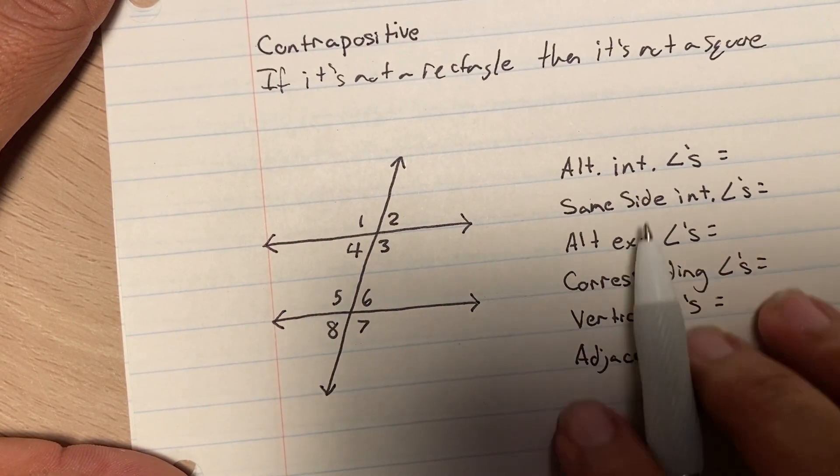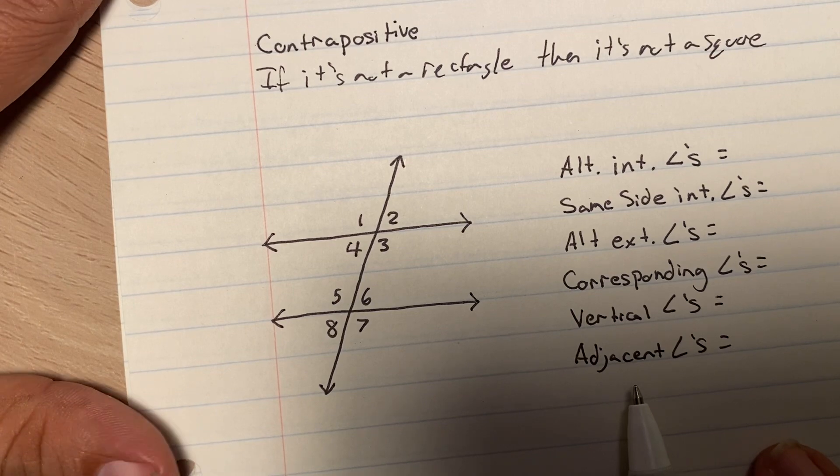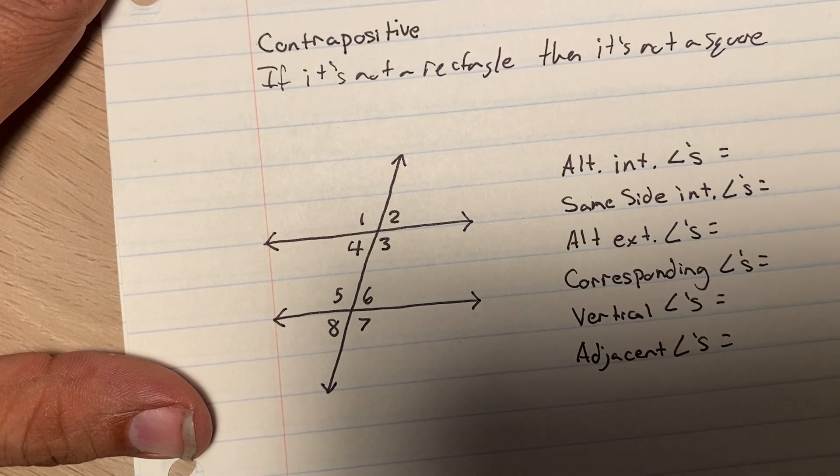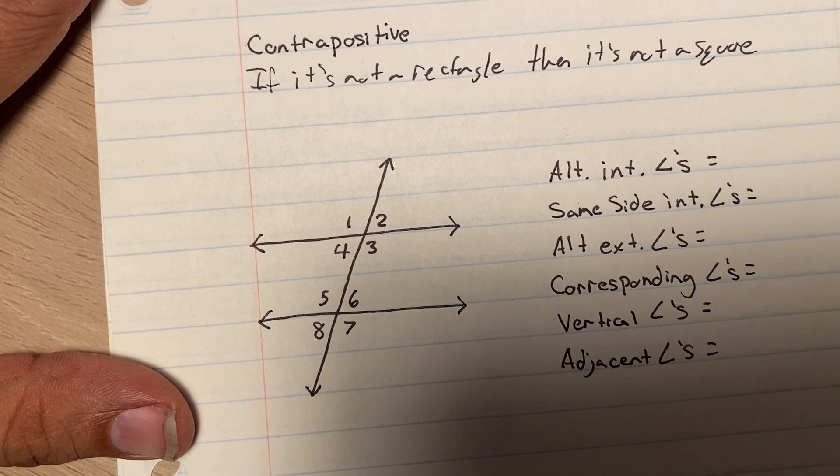Then, let's talk about all these different kinds of angles, and if they're congruent or supplementary. Supplementary means that when you add them up, they equal 180.